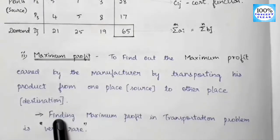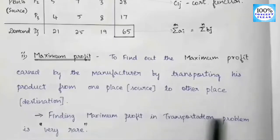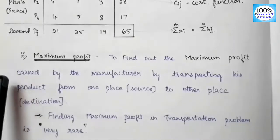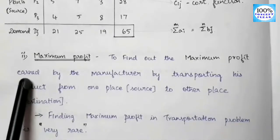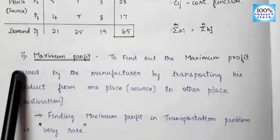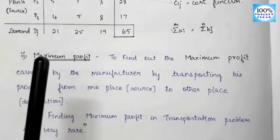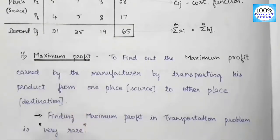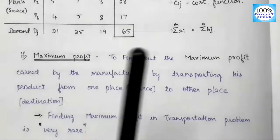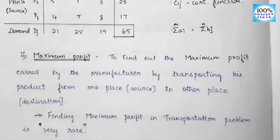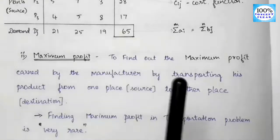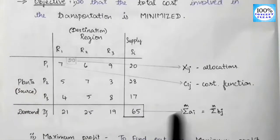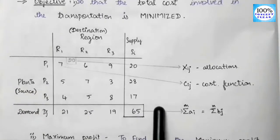The transportation problem's main objective is minimum cost — that is the main objective. The minimum cost is the main objective of the transportation problem. This is the transportation problem model.